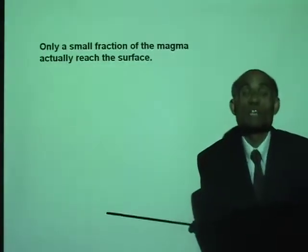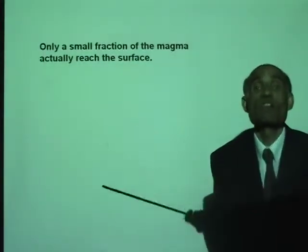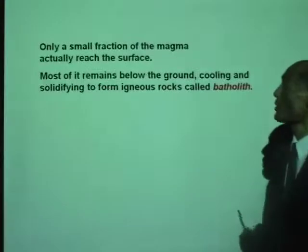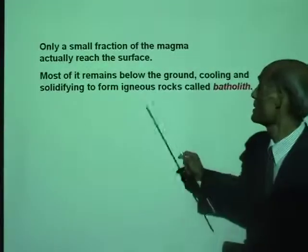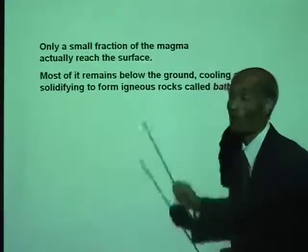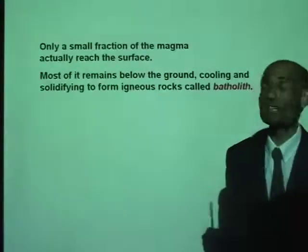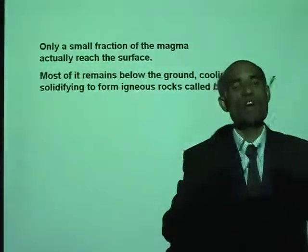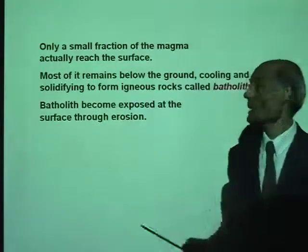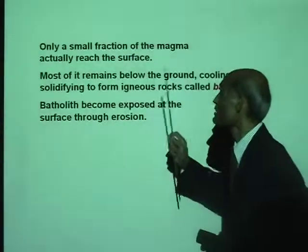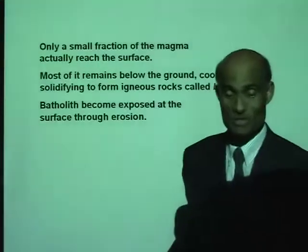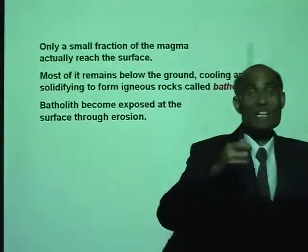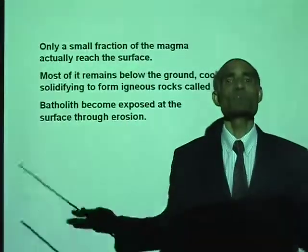A large part of the magma will stay underground, solidify, and become rock underground. Most of it remains below ground, cooling and solidifying into igneous rock. Solidified lava underground is called a batholith. A batholith is a rock formed underground, and it becomes exposed at the surface through erosion. With time, when the soil is eroded away, the rock will become visible.